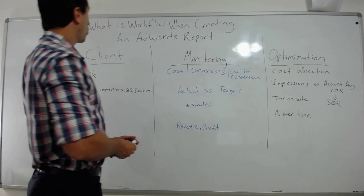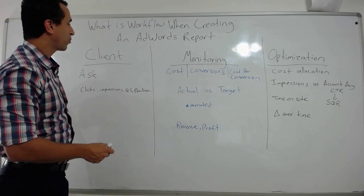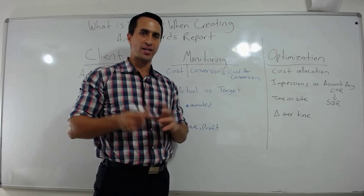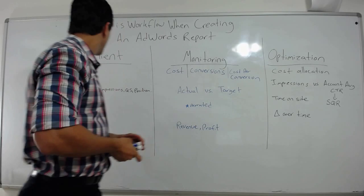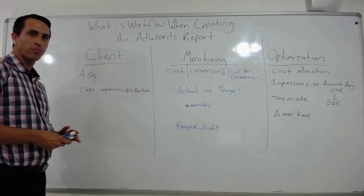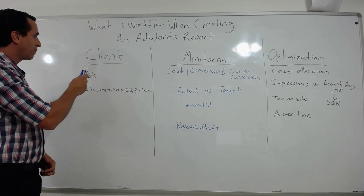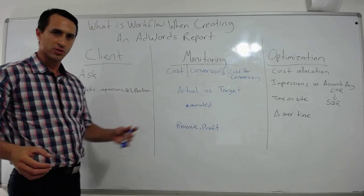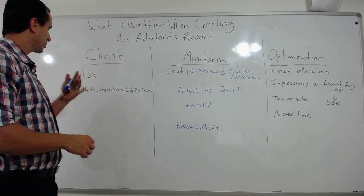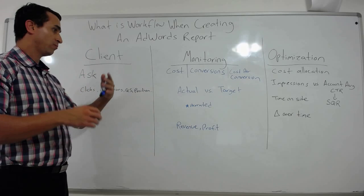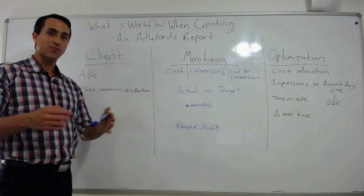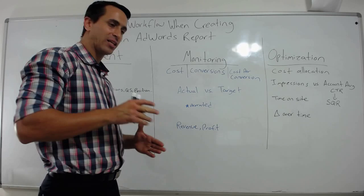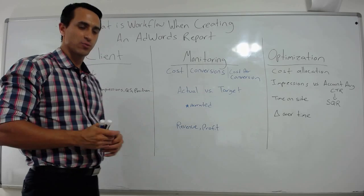The question is: what is the workflow when creating an AdWords report? I want to take one step back and understand reporting for AdWords in general. Before you create a report, you want to ask the client what they care about, what they want to know — if you're an agency or consultant. If a client wants to know results based on sales, whatever it is they ask for, you go ahead and create a custom report to tell them exactly what they want to see in the most concise way.